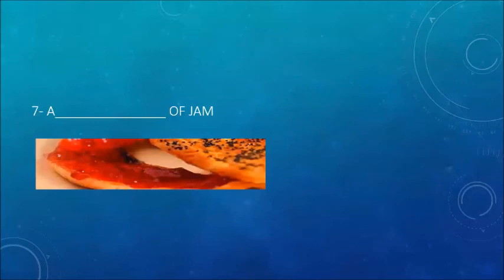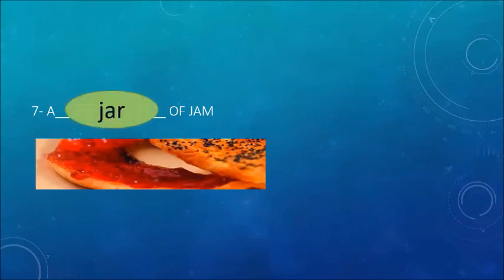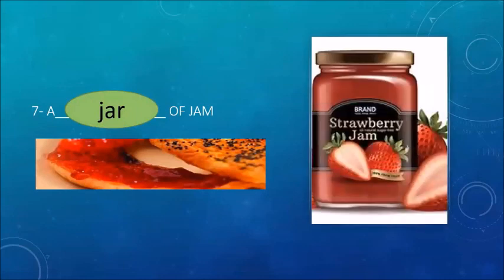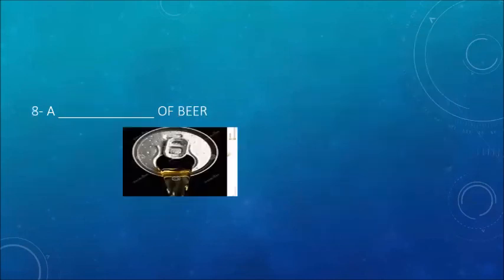A ___ of jam. Jam is an uncountable noun because it cannot be counted easily. The countable noun — a jar of jam — helps us in knowing the quantity of jam we want to discuss.